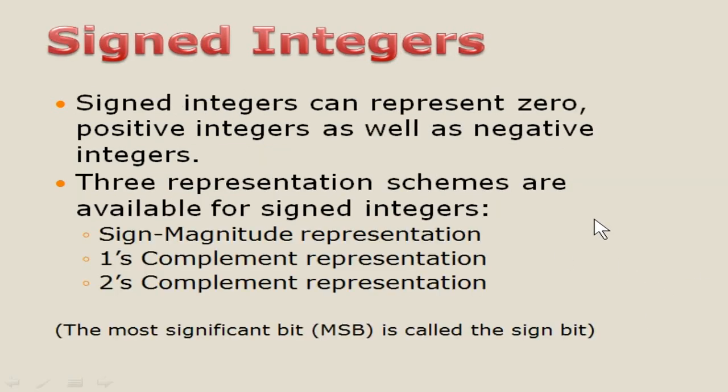Now we go on to signed integers. Signed integers can represent zero, positive integers, as well as negative integers — so all three. Three representation schemes are available in signed integers: the first one is signed magnitude representation, the second one is one's complement representation, and the third one is two's complement representation. You are going to see all three in this video.